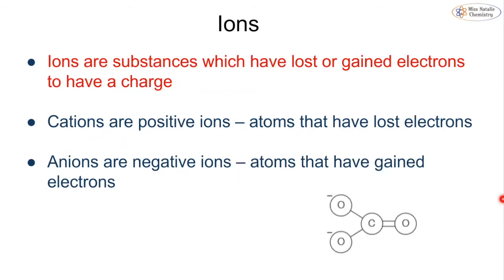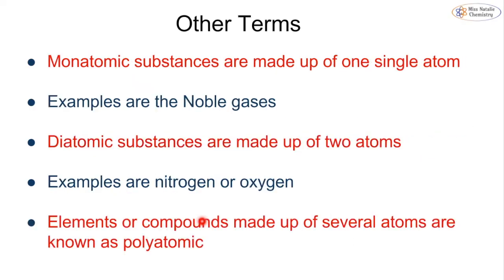A quick reminder about what an ion is. That's a substance that has lost or gained an electron and has a charge, so we can have positive ions known as cations or negative ions known as anions. Other key terms: monatomic means made up of one single atom, diatomic is two atoms, and polyatomic means several atoms. Poly just meaning many.